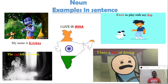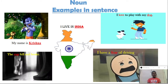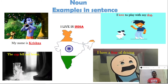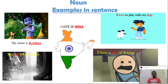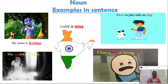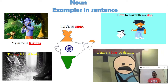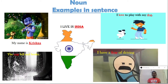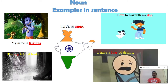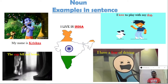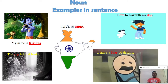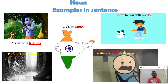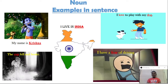'I love to play with my dog.' Love is a feeling and dog is an animal, so love and dog are nouns. 'The cup fell and broke.' Cup is a thing, so it's a noun. 'I have a fear of driving.' Fear is a feeling, so it's a noun.